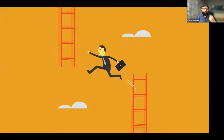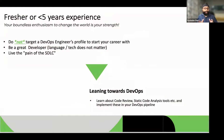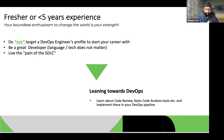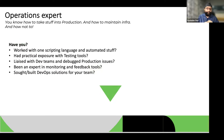Now let's cover how to make a switch into DevOps. If you're a fresher or have three to five years of experience, your enthusiasm and ability to learn are your strengths. My recommendation: don't target a DevOps engineer profile right away. Be a good developer first — pick up any language or technology, but live the pain of the SDLC. In your team, learn about code reviews and static code analysis; encourage your team to implement them if they aren't already.